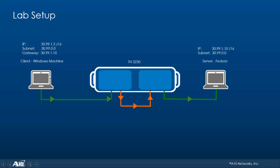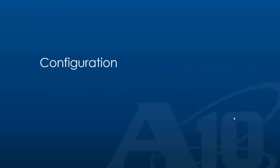In our lab setup we have a client machine — a Windows machine — on one side of the network, then a 3230 connected in the middle, and a server which is a Fedora machine on the other side. There is no security device connected in the middle, but that does not affect the functionality of the network. We are going to try and establish an HTTPS connection from the client to the server using the browser. If the network is configured correctly, we should be able to see the test page from the server on the client's browser.